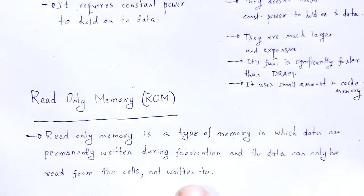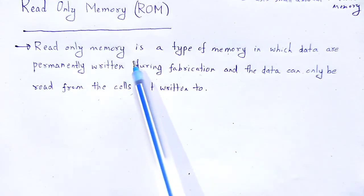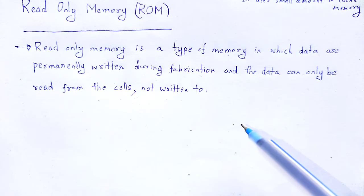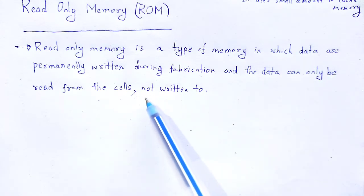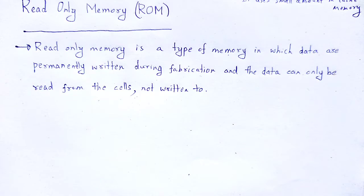Next, read-only memory — ROM. Read-only memory is a type of memory in which data are permanently written during fabrication, and the data can only be read from those cells, not written to. ROM is the built-in computer memory. When the computer is built, ROM is fabricated and it contains data that can only be read, not written.